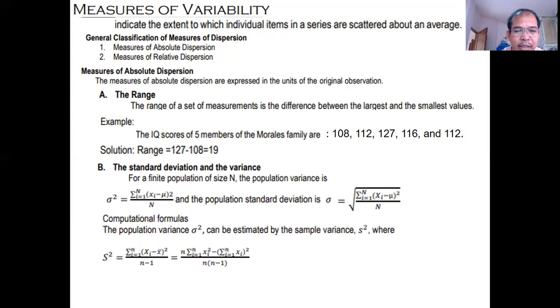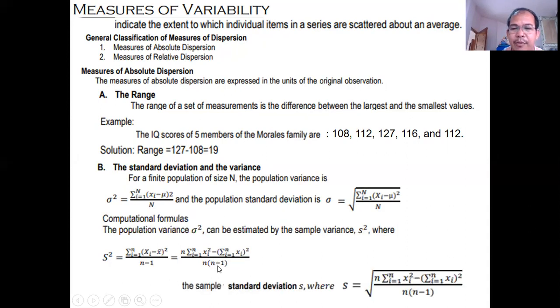Ang given set of data ay sample. So we have to use sample variance or sample standard deviation. From this one, magiging small letter n minus 1 in computational formulas. Ito na yung formula ng sample variance. The same process in determining the standard deviation. So we just take the square root of this. It will become sample standard deviation. Ito yung sample variance, population standard deviation, population variance.